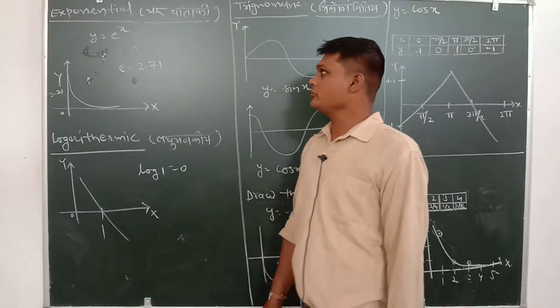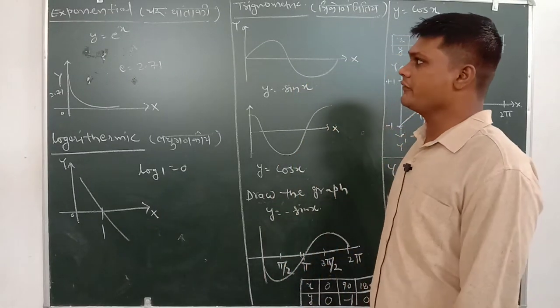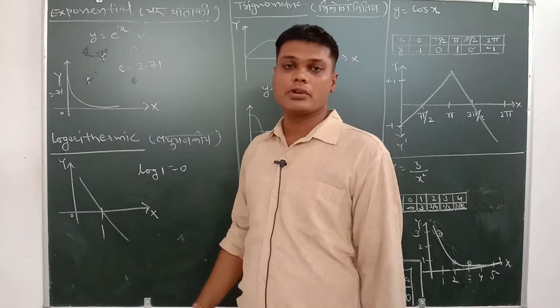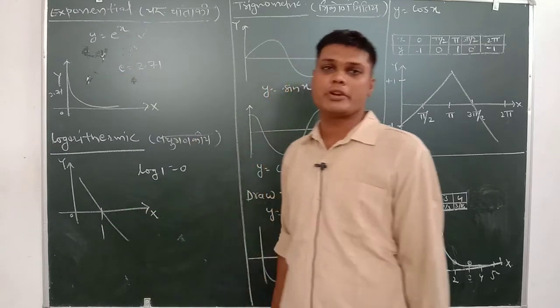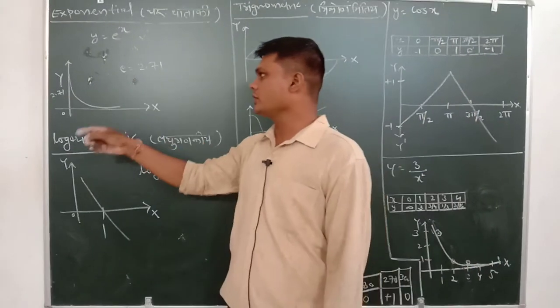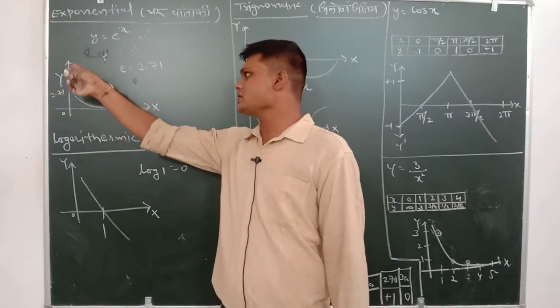Now, today we discuss the exponential function, y is equal to e^x. The standard form is y equals e^x. The value of e is equal to 2.71. The graph is in a hyperbolic shape.